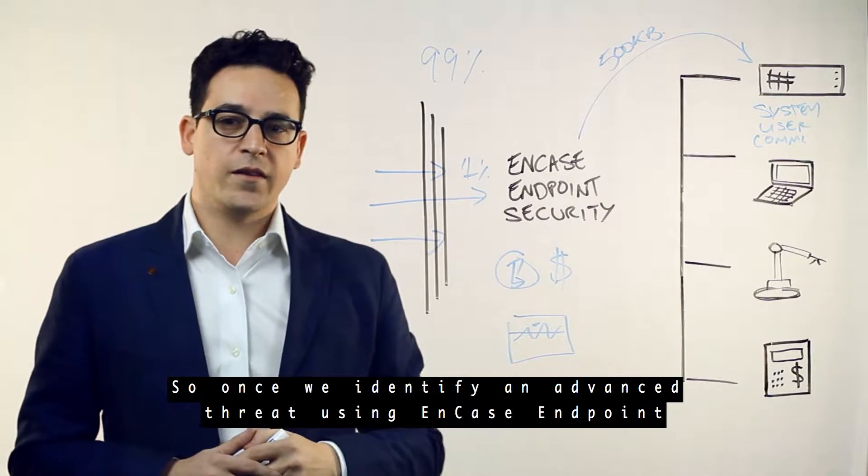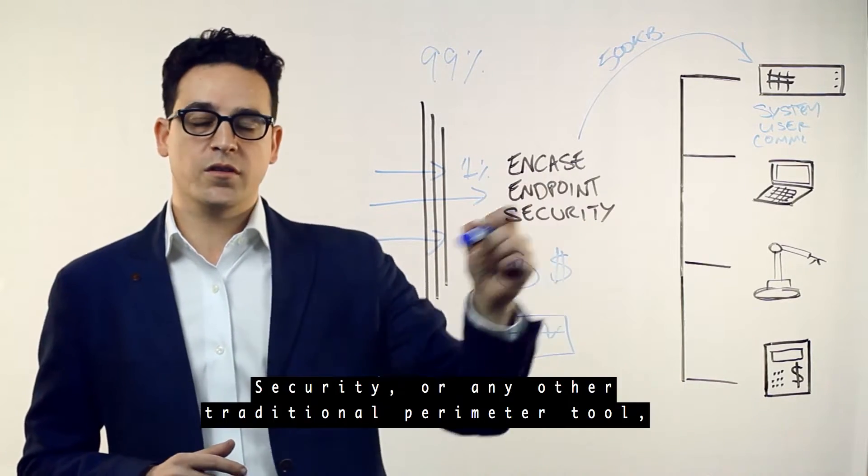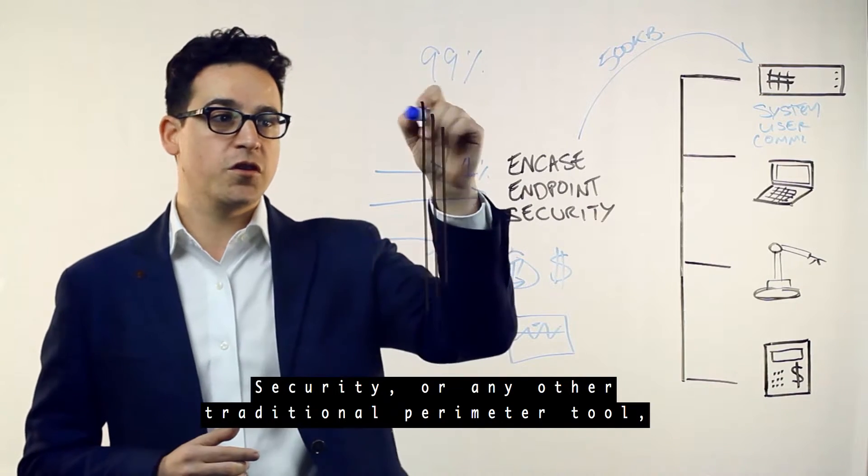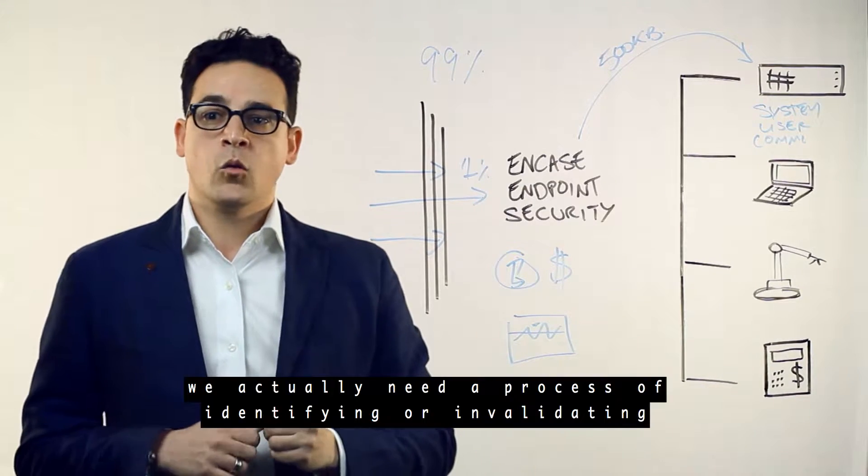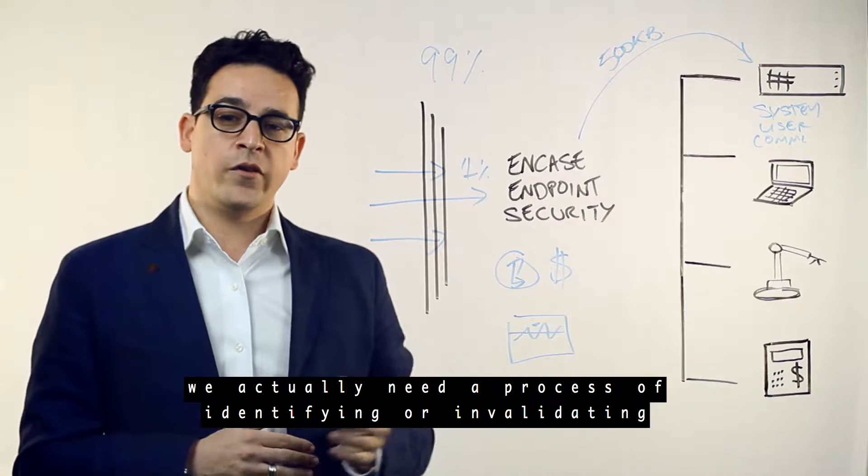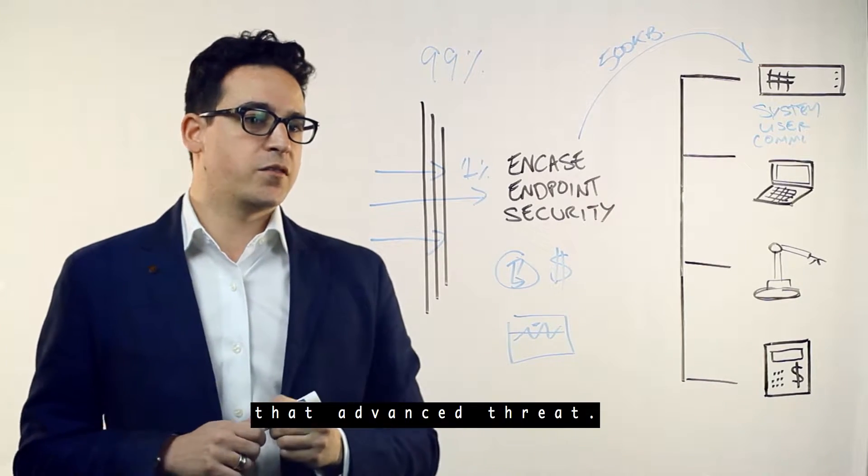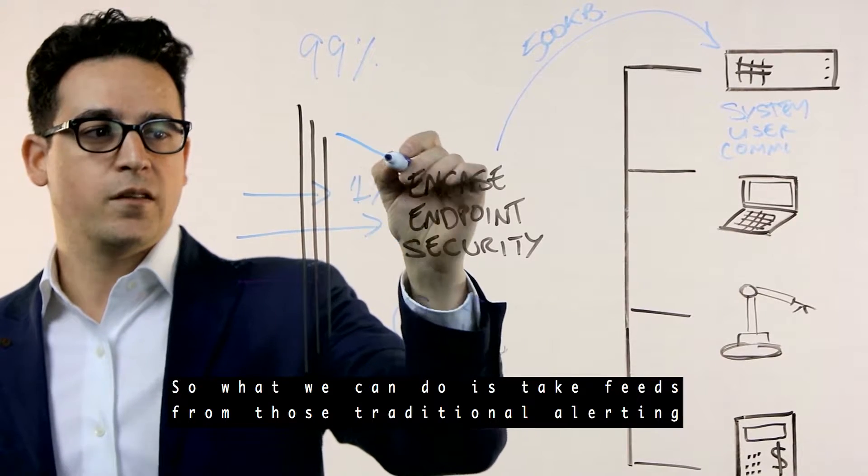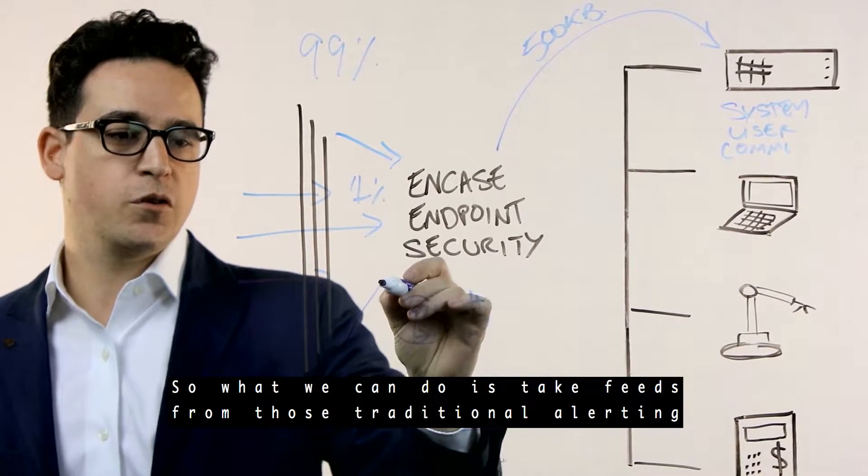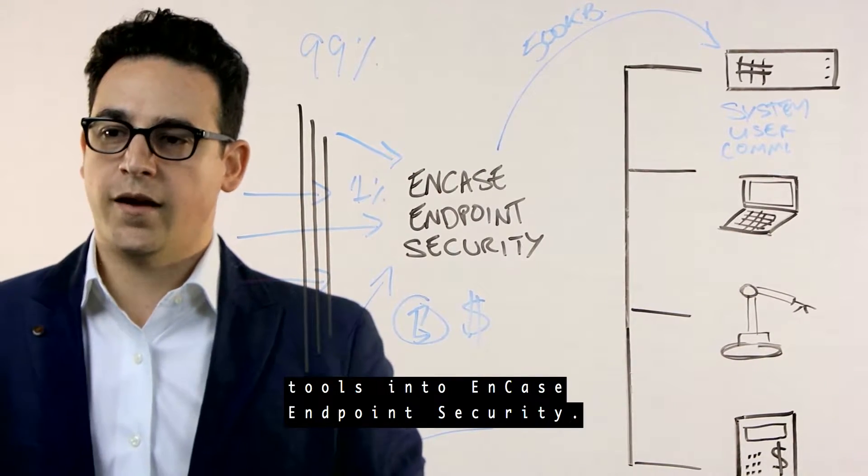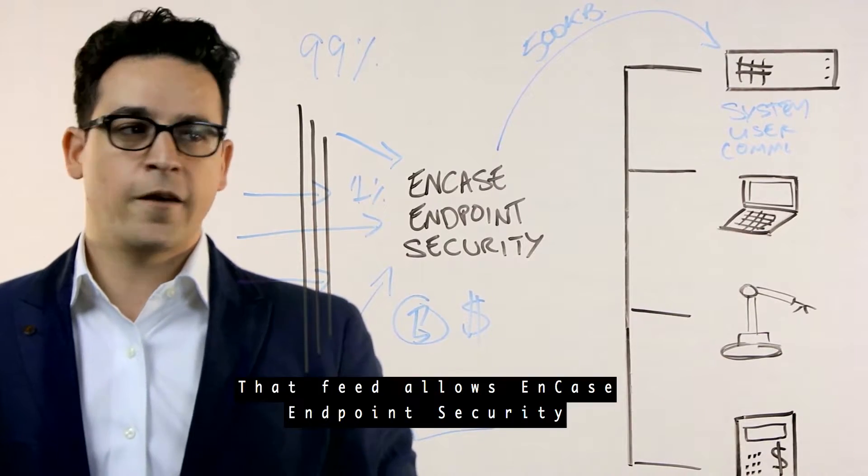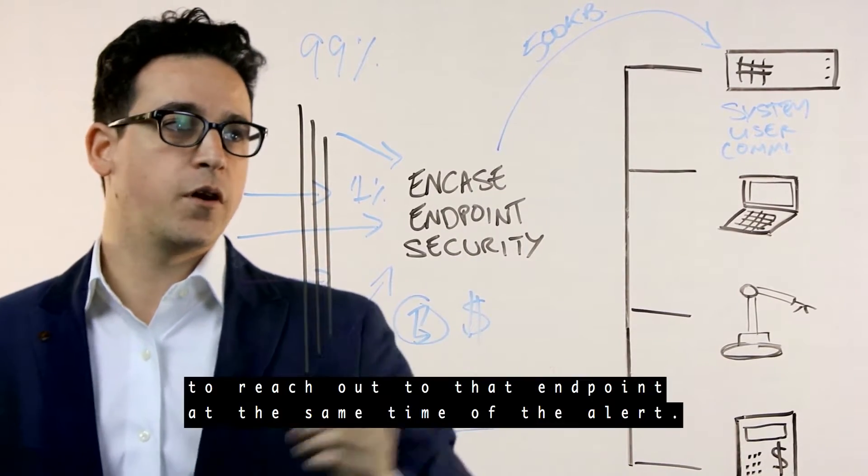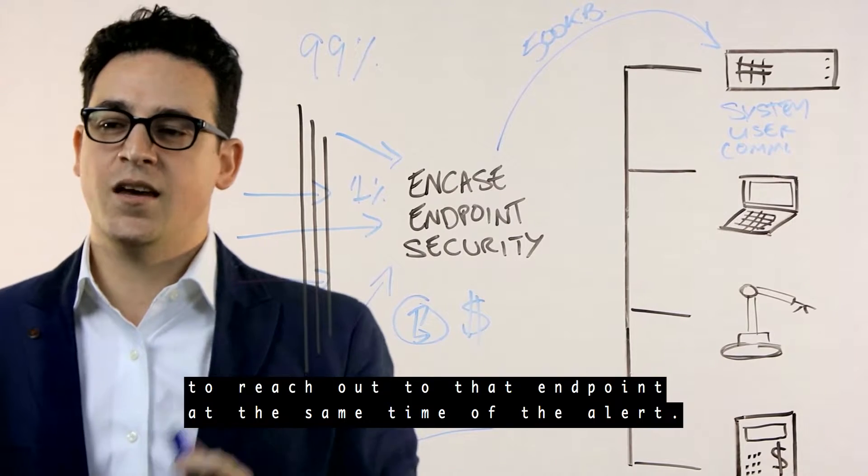Once we identify an advanced threat using NCASE endpoint security or any other traditional perimeter tool, we actually need a process of identifying and validating that advanced threat. We can take feeds from those traditional alerting tools into NCASE endpoint security.